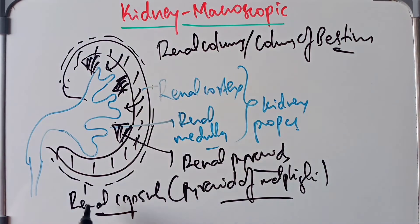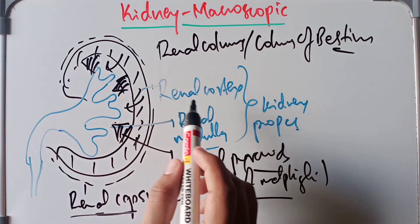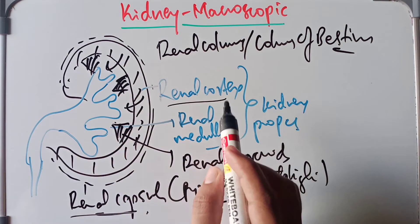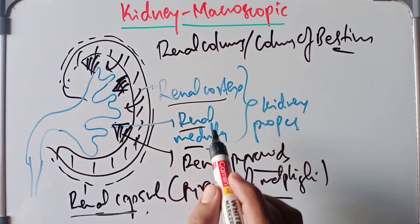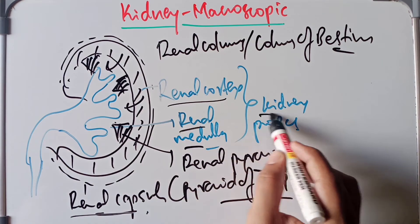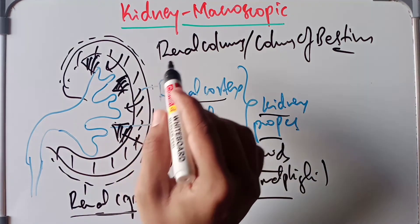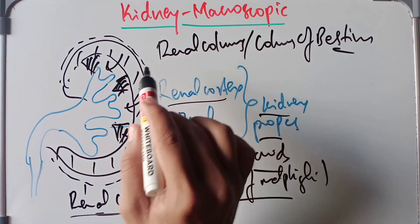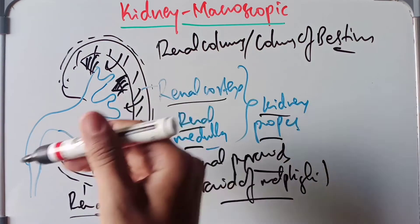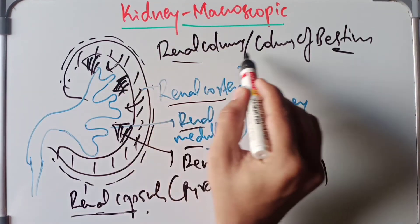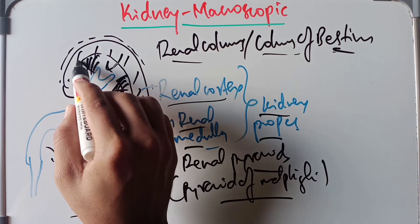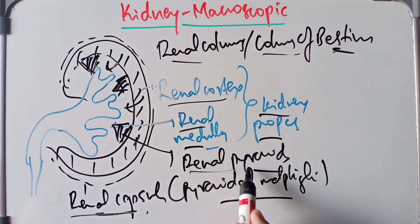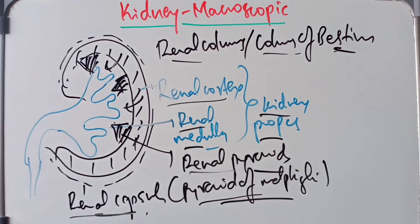To recap the macroscopic structure: the outer covering is the renal capsule; just below it is the renal cortex; together the renal cortex and renal medulla form the kidney proper. The cortex converging between the medulla forms the renal columns or columns of Bertini, and the conical masses are the renal pyramids or pyramids of Malpighi.